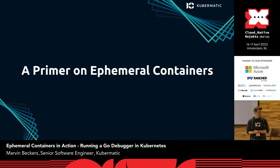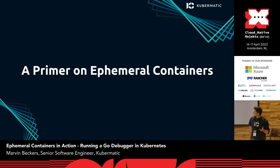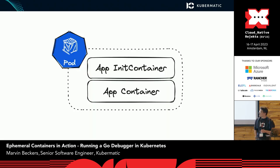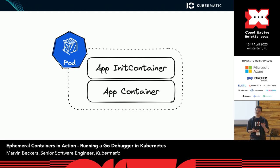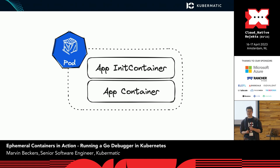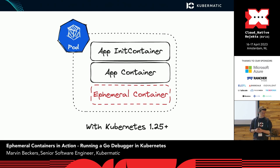Let's talk about ephemeral containers because they are quite a recent introduction to Kubernetes. As a reminder of how it works in Kubernetes: a pod is kind of an immutable unit. The containers you have — once you've created a pod — define what will be launched as one single unit. That changed a bit with Kubernetes 1.25.